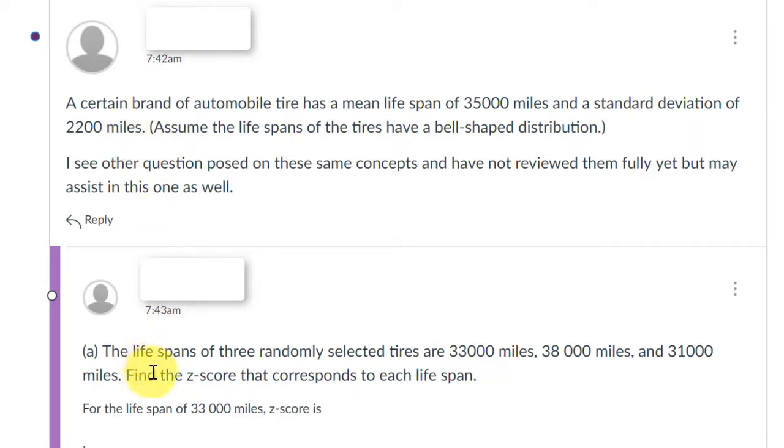Now, the particular part of the question is that there are three randomly selected tires, which is important, with 33,000 mile lifespan, 38,000 mile lifespan, and 31,000 mile lifespan, and we need to find the Z-scores for each of those.